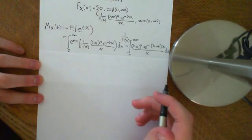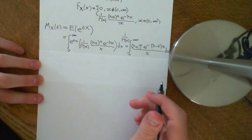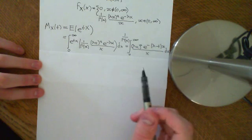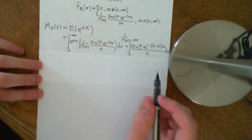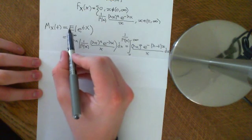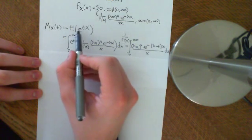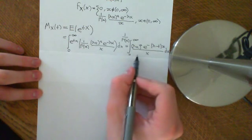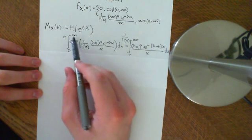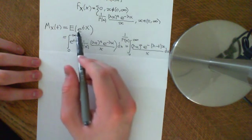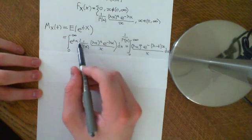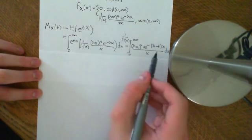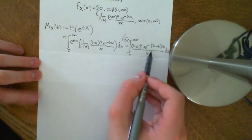Welcome back to this second part of this video in which we are calculating the moment generating function of a random variable x which is Gamma(a, λ) distributed. We said that this was, by definition, the expected value of e to the tx. Then we applied the law of the unconscious statistician to say that this was going to be the integral from 0 to infinity of e to the tx times the probability density function dx. Now what we want to do is work out this integral.